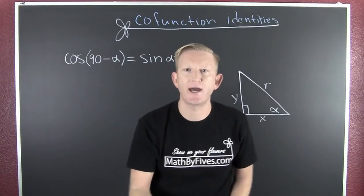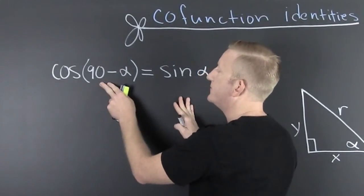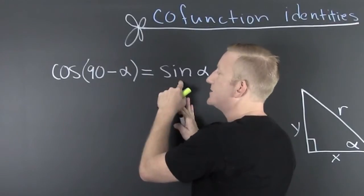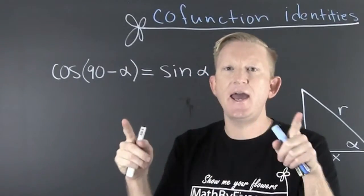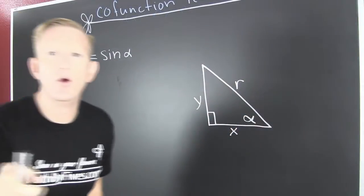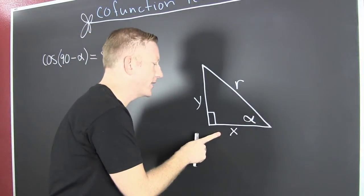So, in order to do that, we look at this. The cosine of 90 minus alpha is the sine of alpha. To see why, we look at the right triangle down here.